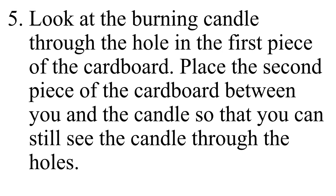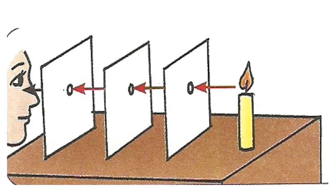Look at the burning candle through the hole in the first piece of cardboard. Place the second piece of cardboard between you and the candle so that you can still see the candle through the holes. Through this picture we can understand how the setup should be. The lighted candle is placed on the table and three cardboard pieces with holes are aligned so that looking through the extreme board, you can see the light.